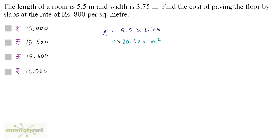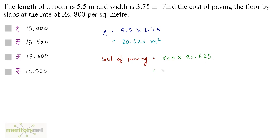We know the area and we have been given the cost of paving the floor at the rate of 800 rupees per square meter. So the cost of paving the complete room will be equal to 800 times 20.625. That gives you 8 times 2062.5, which equals 16,500 rupees. So option D is the correct answer.